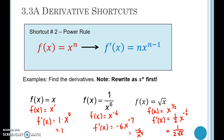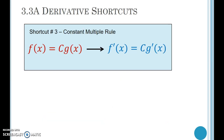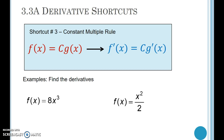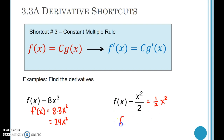Note that you need to be comfortable with exponents to use these shortcut rules. Shortcut number 3: if you have a constant times a function and take a derivative, the derivative is the constant times the derivative of the function. For example, the derivative of 8x³ is 8 times 3x², which is 24x². You don't have to show that intermediate step. Similarly, x²/2 can be rewritten as 1/2 x², so its derivative is 1/2 times 2x to the 1st power, or just x.